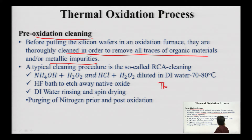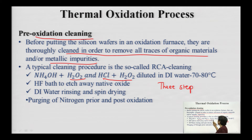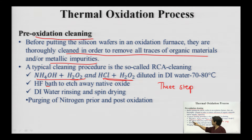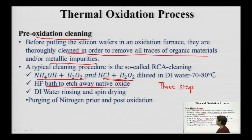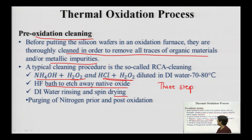RCA cleaning is basically a three-step process. The three stages are: NH4OH + H2O2, then HCl + H2O2 for the first cleaning step, followed by DI water rinsing, then the second cleaning stage, again DI water rinsing, with an HF bath in between to remove any native oxide layer. After cleaning, intermittent rinsing with DI water and spinning is carried out to ensure no moisture remains on the wafer surface.